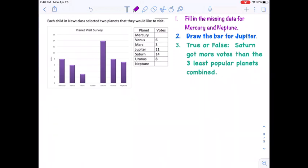Each child in Newt class selected two planets that they would like to visit. You can see we have part of a bar graph and part of a table, and the first thing we're asked to do is fill in the missing data for Mercury and Neptune.